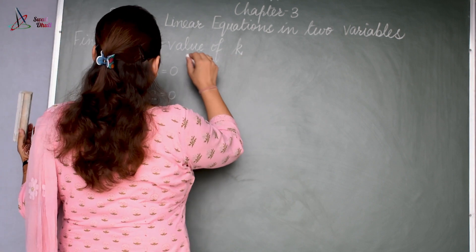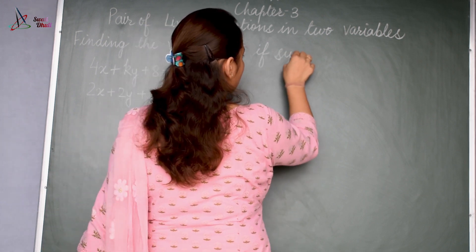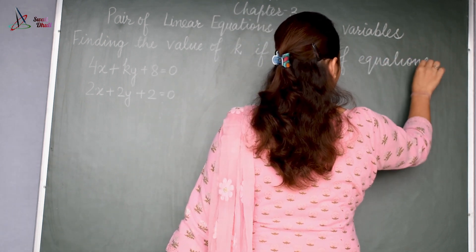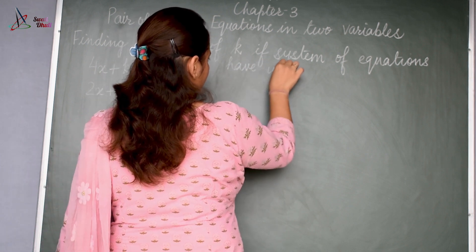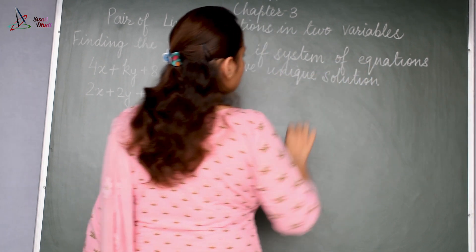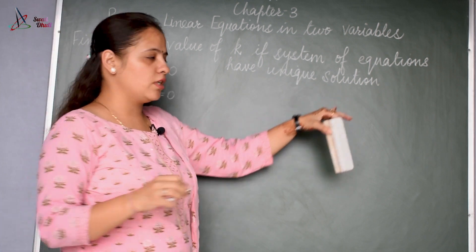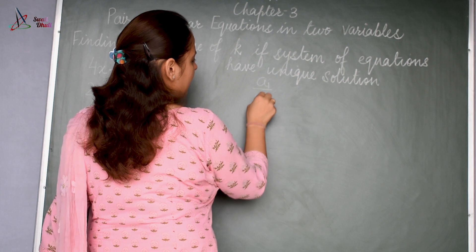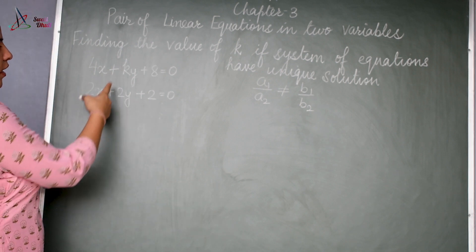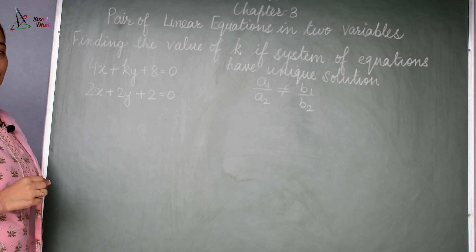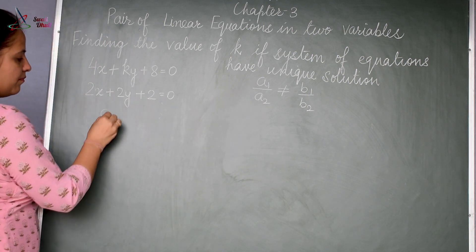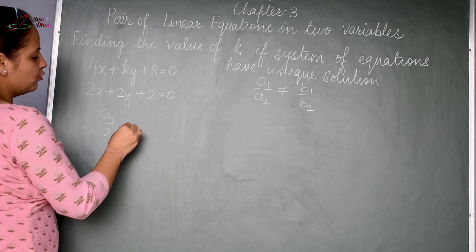First, we will look at finding the value of k if the system of equations has a unique solution. You must know the condition: a1 by a2 is not equal to b1 by b2. We are given two linear equations in two variables, and we need to find the value of k using this condition.